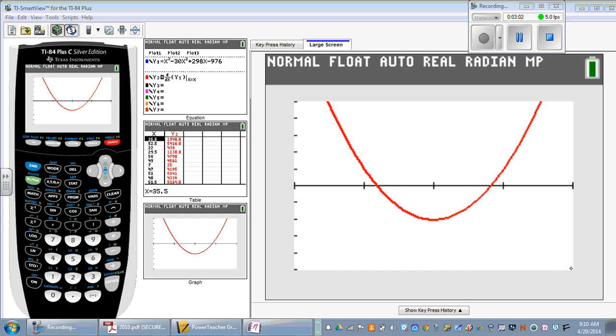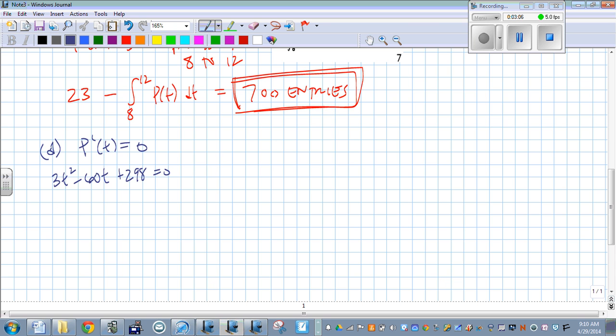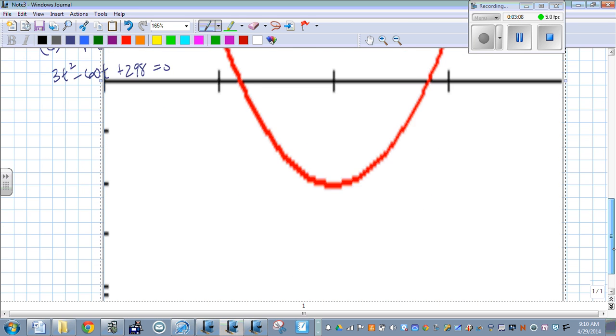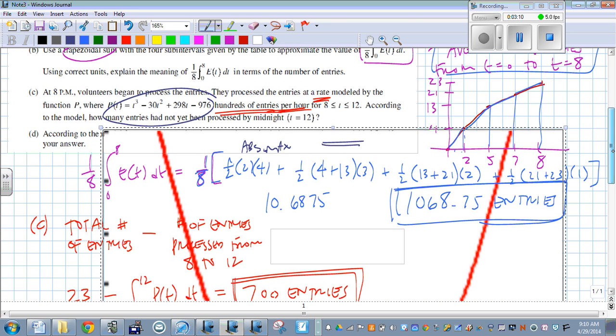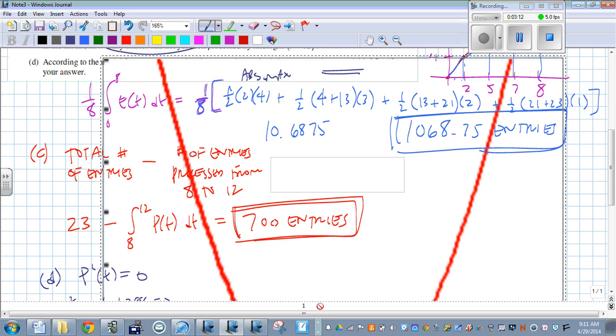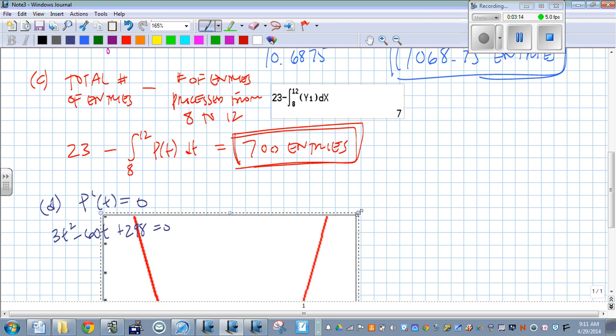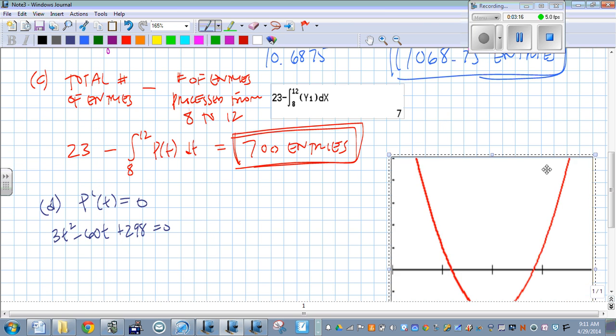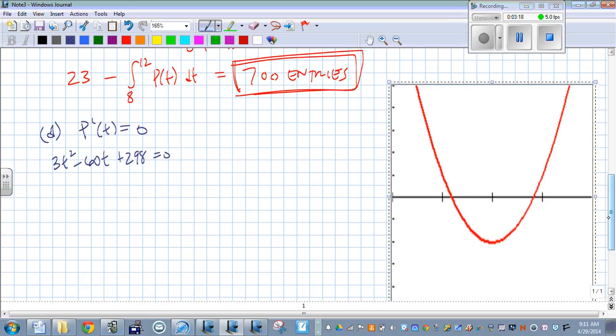So on this interval from 8 to 12, we can see that we have two critical values. One here, one here, one here.